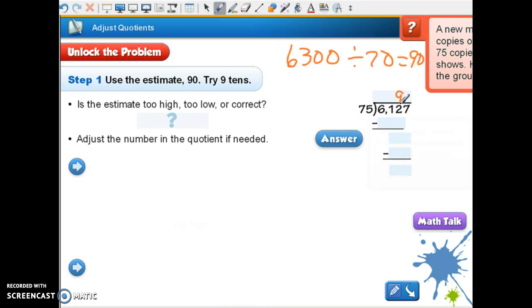And we can multiply 75 times 90. 9 times 5 is 45, carry the 4. 9 times 7 is 63 plus 4 is 67. Now we have a problem. If we have 612, can we subtract 675? No.